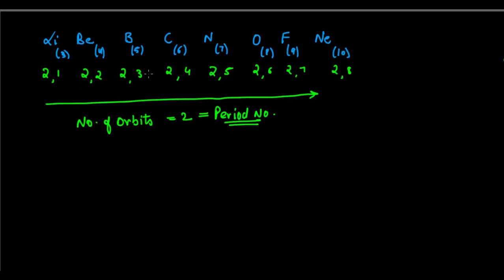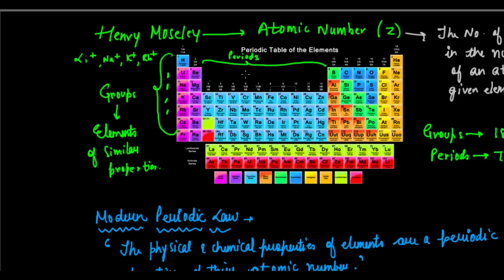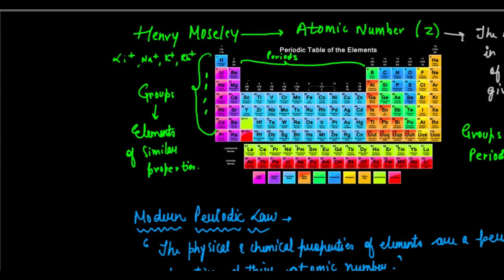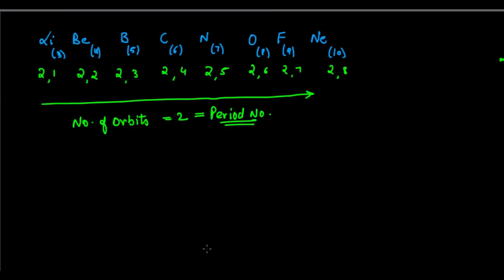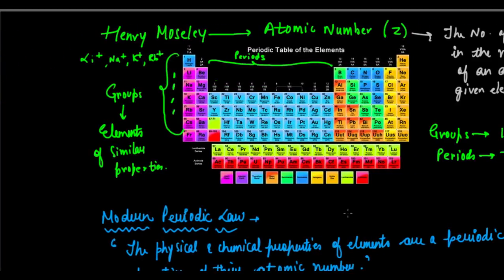You can see that the number of orbits in each element of period two is two orbits, and it is placed in period two. So the number of orbits gives us an idea of the period number of the elements. That is one more thing about the position of elements.